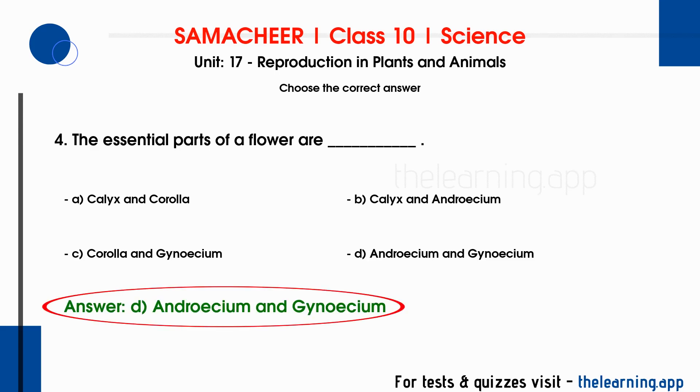Androecium and gynoecium are the reproductive parts of a plant. If you have a flower, you have a reproductive part. Androecium is the male reproductive part, and gynoecium is the female reproductive part.